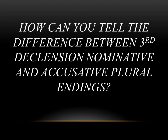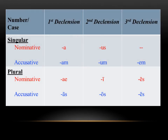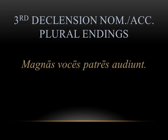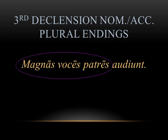The last thing we want to talk about is how you can tell the difference between third declension nominative and accusative plural endings. Both of those endings are -es — they're spelled the exact same way. So if we look at our chart and go to the third declension column, you'll see that -es is spelled the same way for both. When you're dealing with third declension plural endings, you always have to think about context and noun-adjective agreement. For example, in our sentence, voces and patres have the exact same -es ending, so we have to distinguish which is accusative and which is nominative.